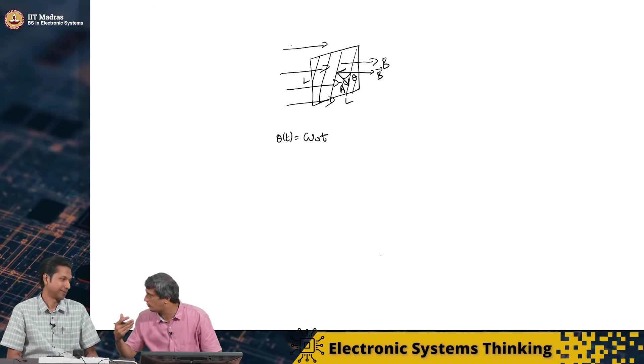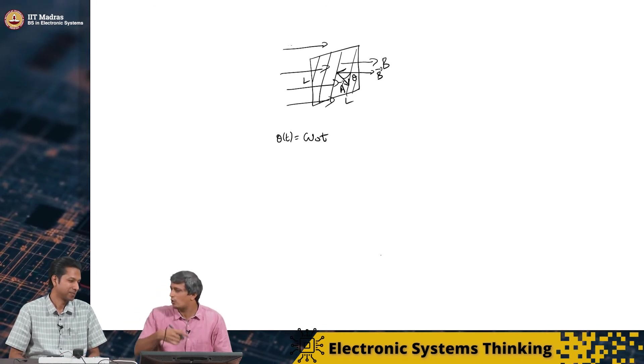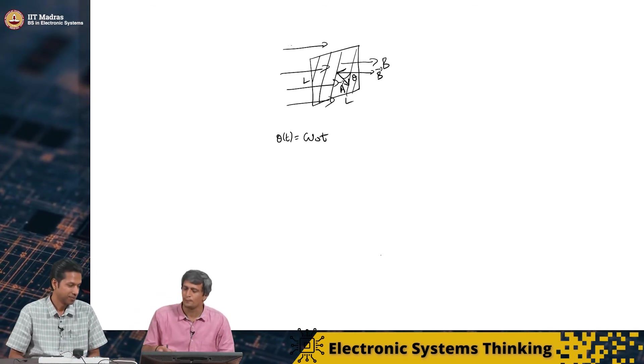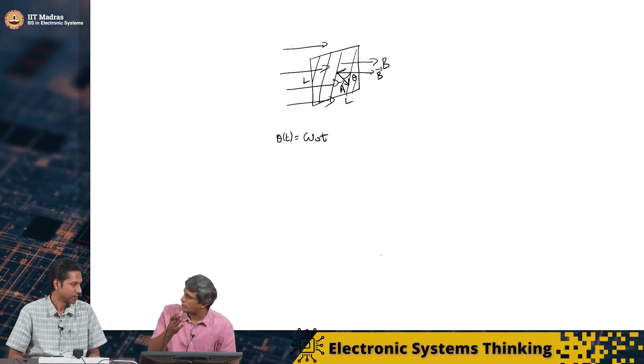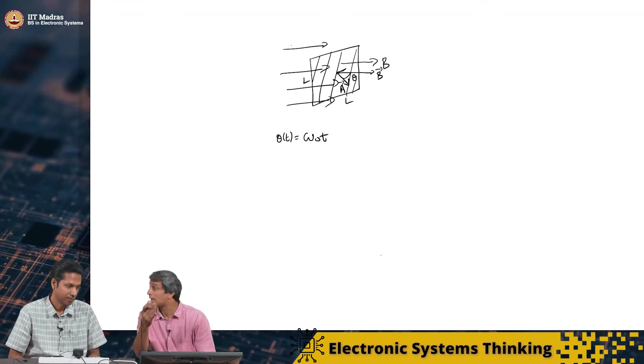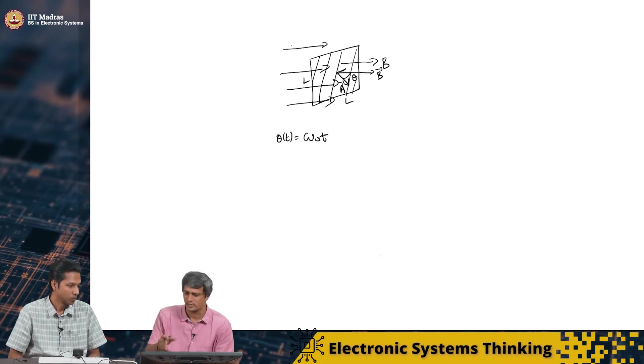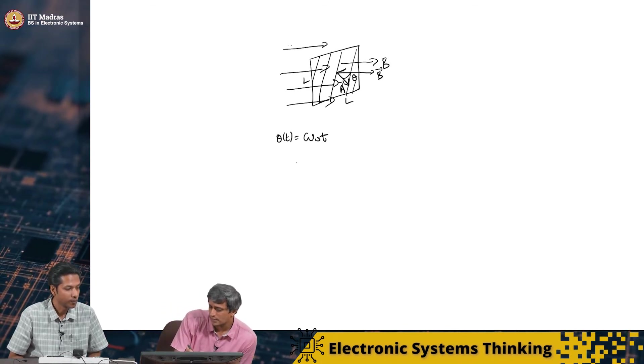That means, this angle that it forms between B and A is going to be a function of t and it is going to be omega naught t. Now, this is the case if it were a constant angular velocity. Ok. In this case of course, we started with something, it slowed down because of friction and all that. Yeah. And we are not able to sustain that angular velocity. So, the omega naught itself is a function of time. So, there will be an angular acceleration that we have to consider. Let us not worry about that for now.